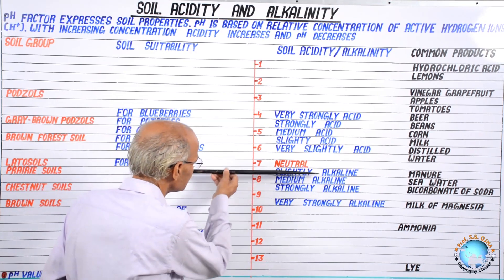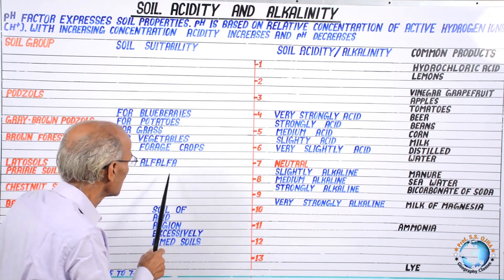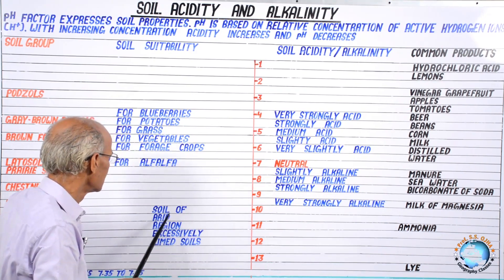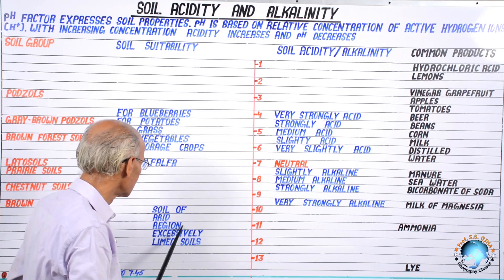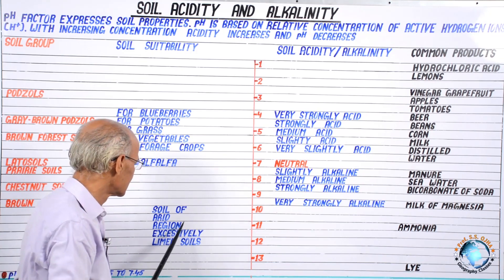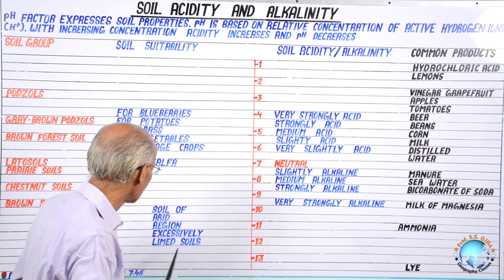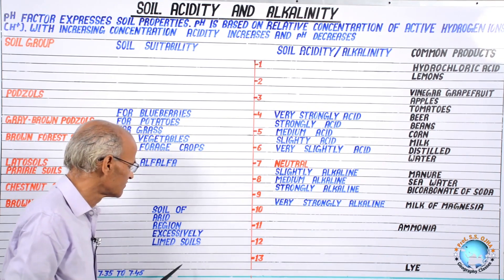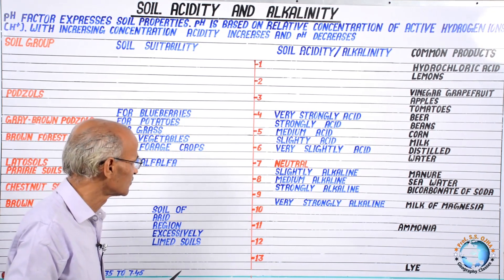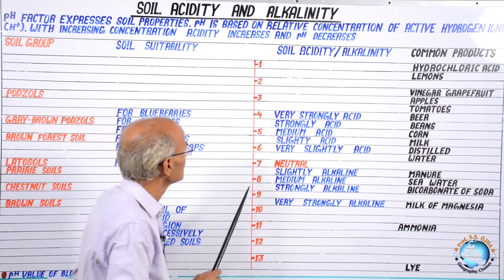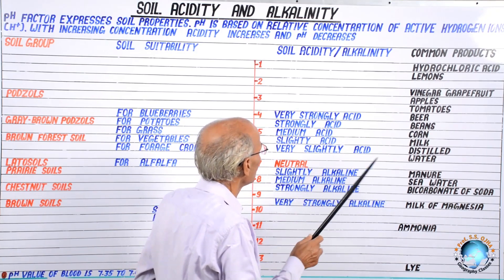Neutral soil has a pH value of seven, but arid region soils — hot deserts — have increased alkalinity. This is excessively limed soil where no vegetative growth is possible except for some thorny shrubs and bushes. Let us understand the amount of acidity and alkalinity moving away from the neutral group of soil.